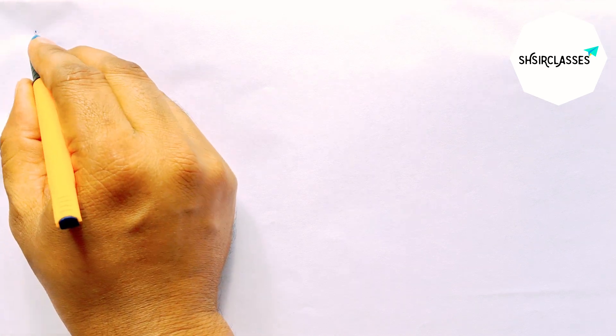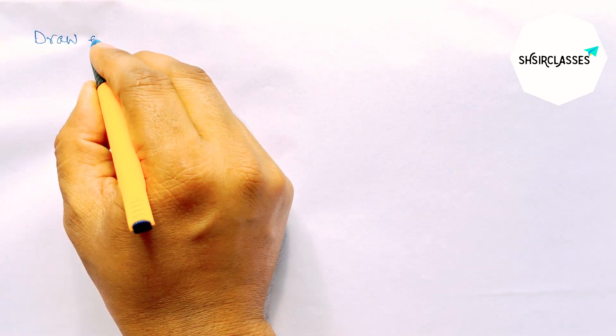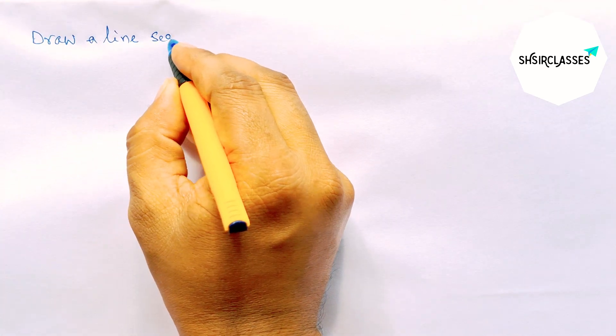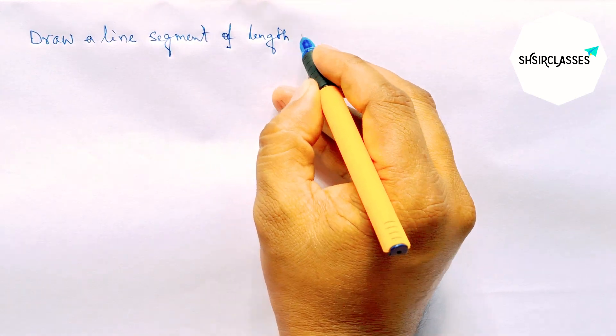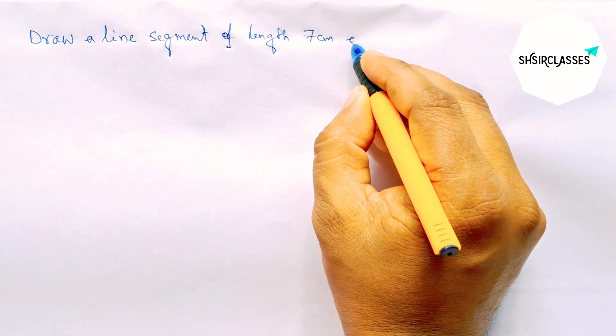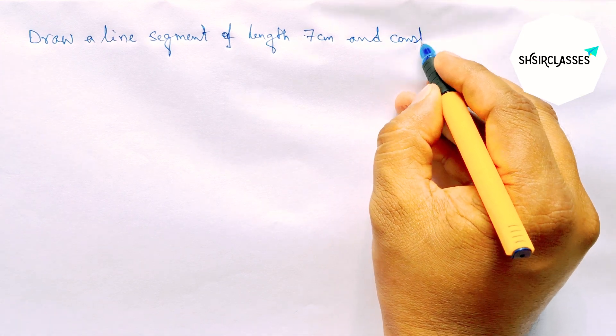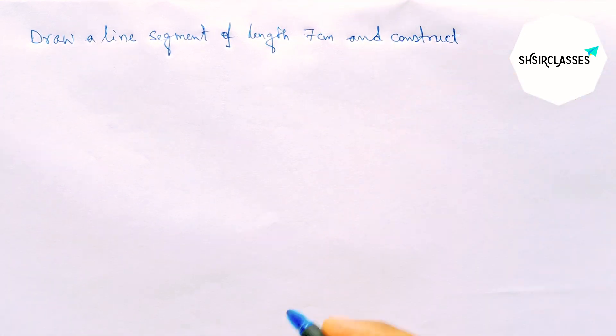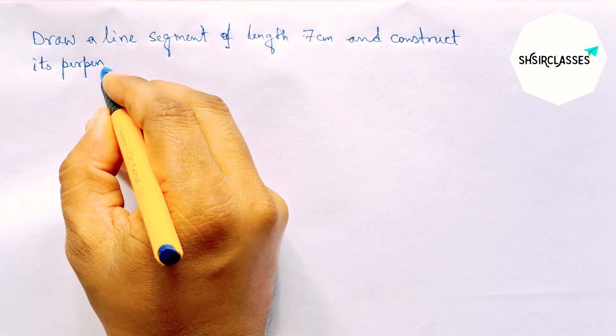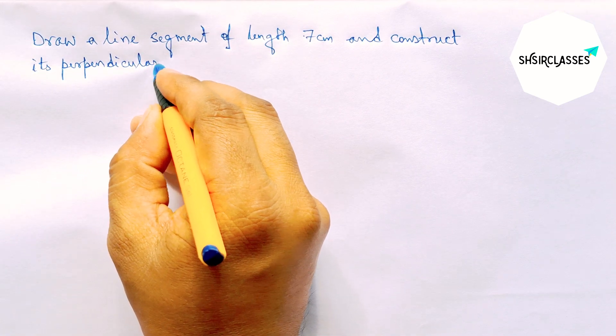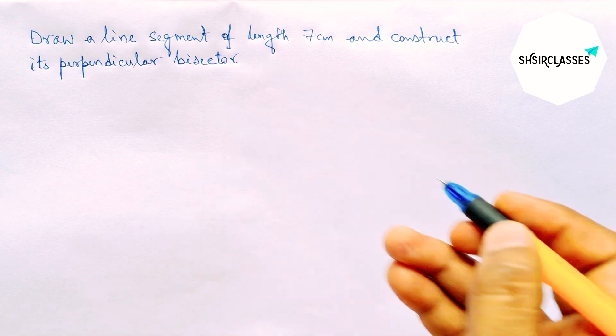Hi everyone, welcome to SACER classes. Today in this video, draw a line segment of length 7 cm and construct its perpendicular bisector to the line segment AB in easy way. So please watch the video till the end. So let's start the video.